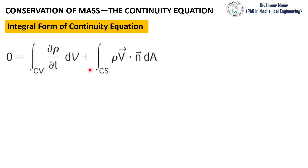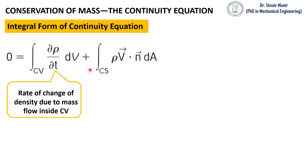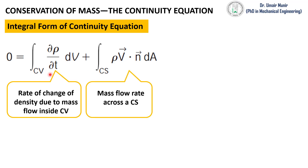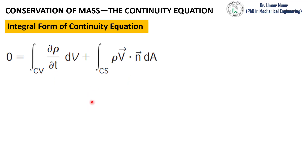We have this integral form of continuity equation. In this equation, the first term is the rate of change of density due to mass flow inside a control volume, and the second term represents the mass flow rate across a control surface. In this integral form, we need to convert this area integral into a volume integral.